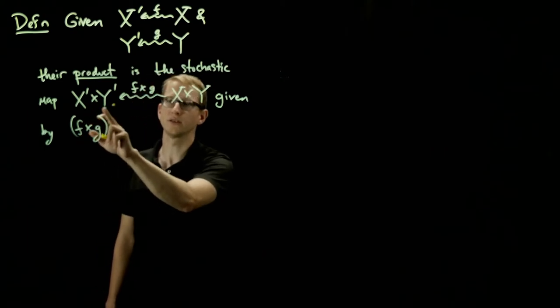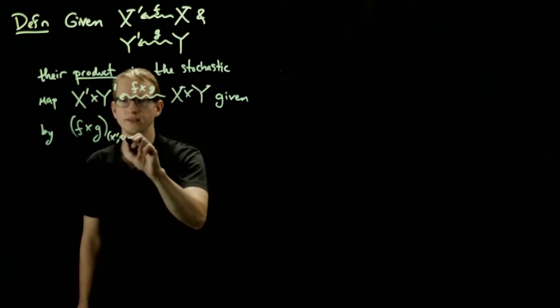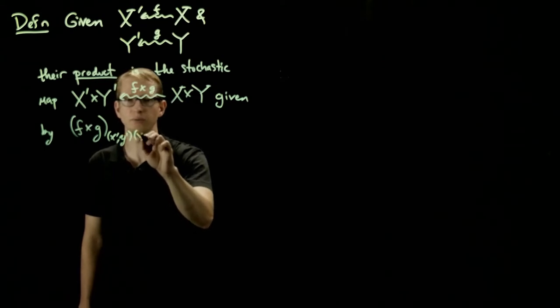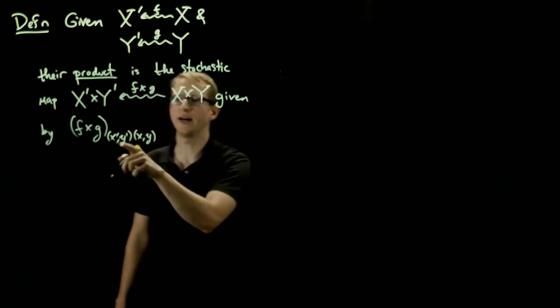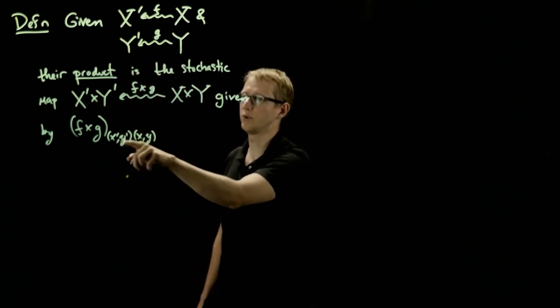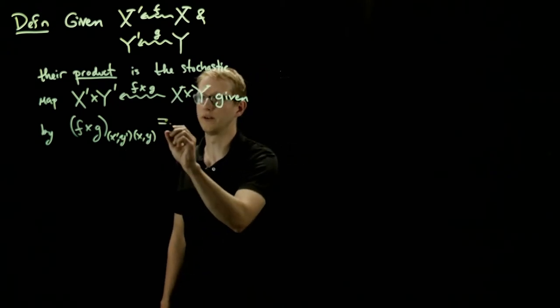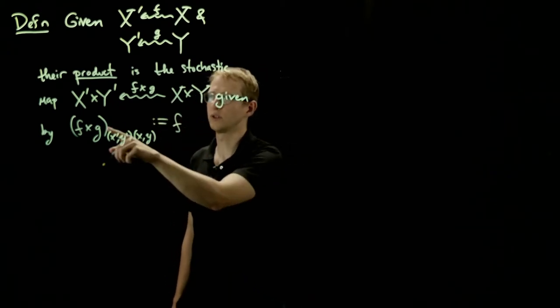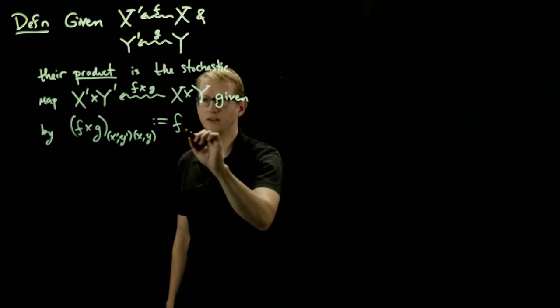So that probability distribution is determined by the value of our initial input with our output. And it's just the product of the associated probabilities from F and G.